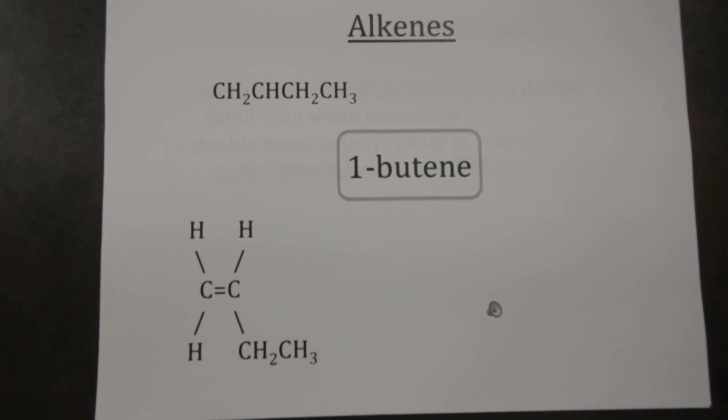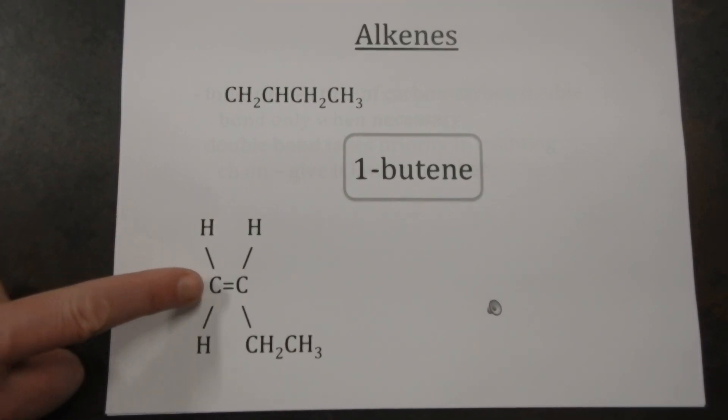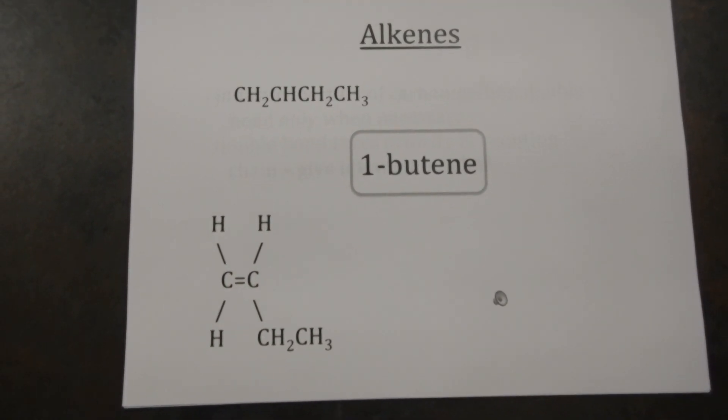We've got our four carbons in our longest chain. One, two, three, four, and the one means it's between the first and second carbon in our longest chain.